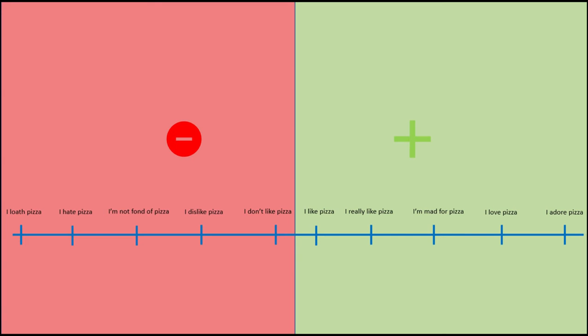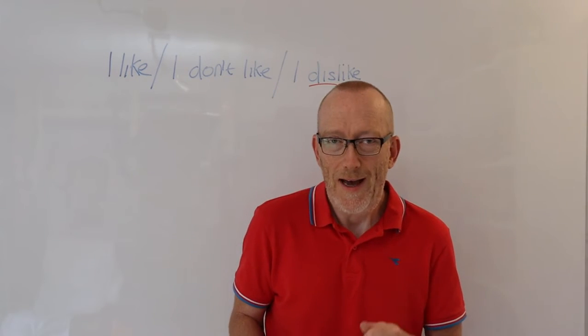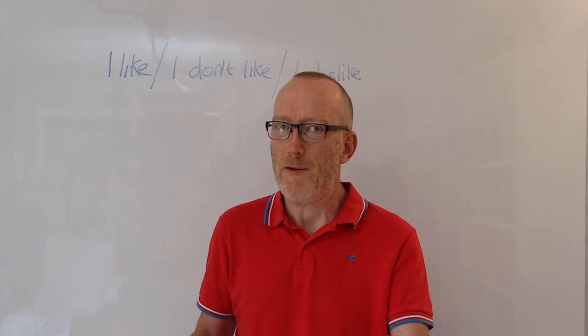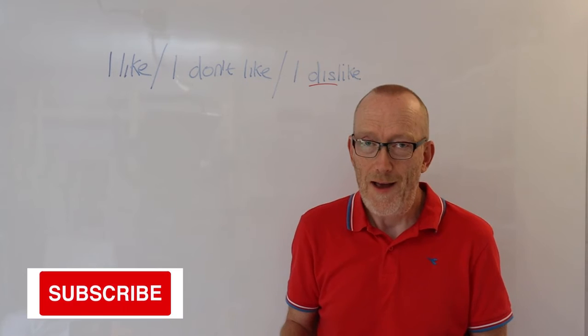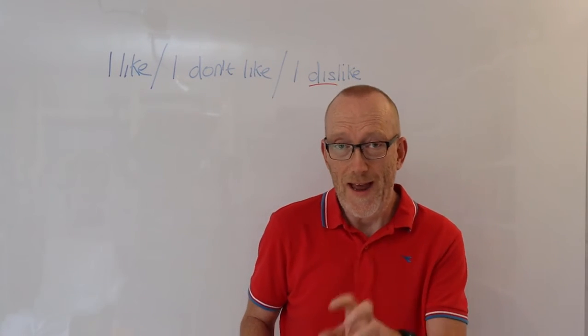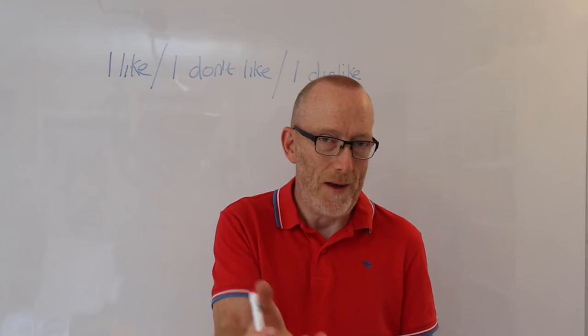But at the extremes, you can see love and adore, or you can see hate or perhaps despise. So there are lots of different ways that you can add meaning or more emphasis to your negative sentences. So this is a great way to expand your vocabulary as well. Instead of just using like or don't like, there are many different ways to create negative meaning or even positive meaning in your sentences.